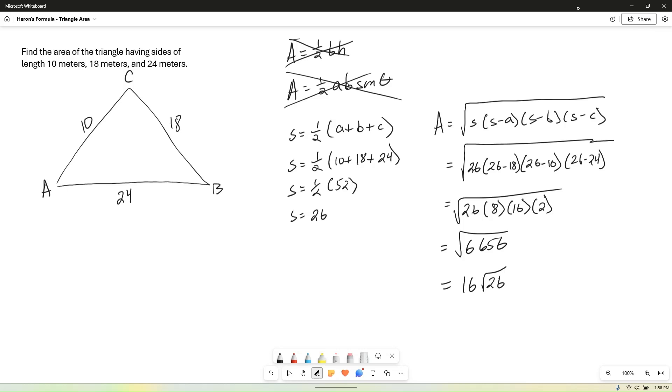Or we could approximate that as a decimal. So the area is equal to 81.58. And since we're dealing with measures in meters, this area will be in meters squared. So the area is approximately 81.58 square meters.